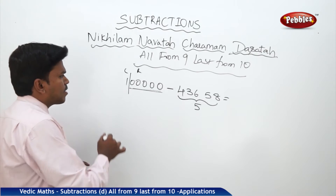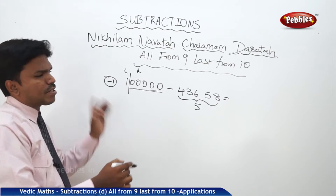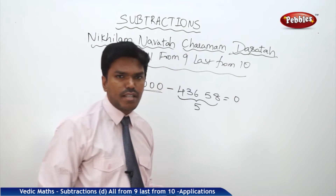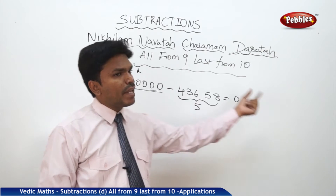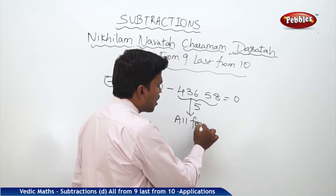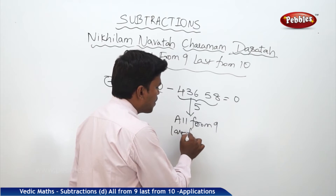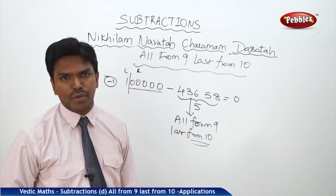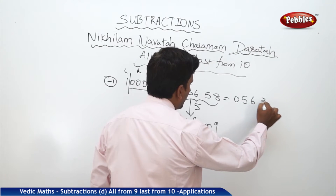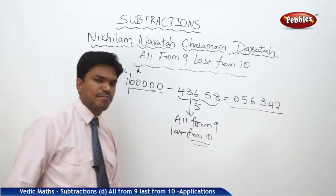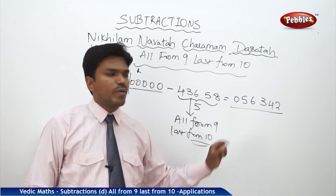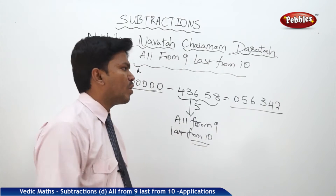To get the answer, subtract one from the given left part. What is the left part here? One. If one is subtracted from one, how much will you get? Zero. Now to get the remaining part of the answer, simply apply 'All from 9, Last from 10' to the subtrahend number. So for 43658: applying All from 9, Last from 10 gives 5, 6, 3, 4, 2. So my answer is 056342. Just subtract one from the left part and apply All from 9, Last from 10 to the subtrahend.